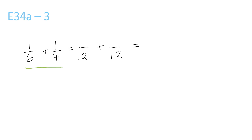6 and 4 both go into 12. 6 times 2 is 12, and 4 times 3 is 12. So this left fraction, we have to times the top and bottom by 2 to get 2 over 12. And the right fraction, we have to times the top and bottom by 3, so we get 3 over 12. Now both the numbers at the bottom are the same, we can add the top ones to get 5 over 12.